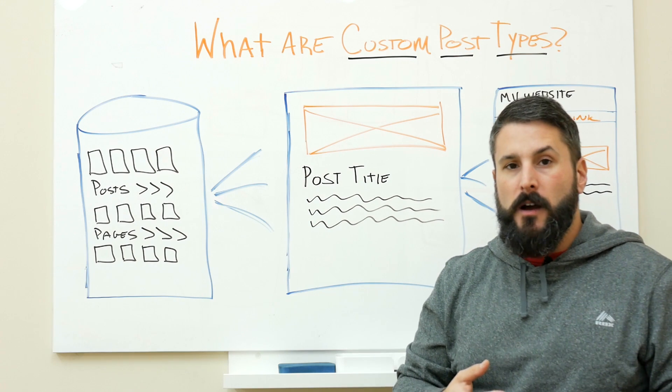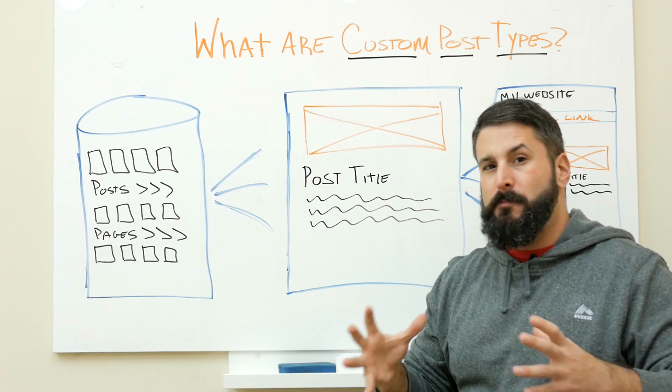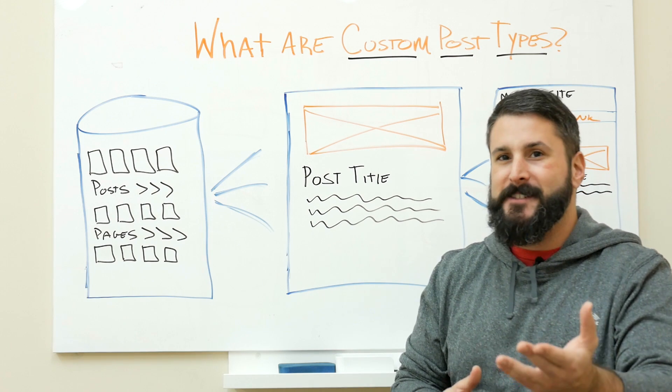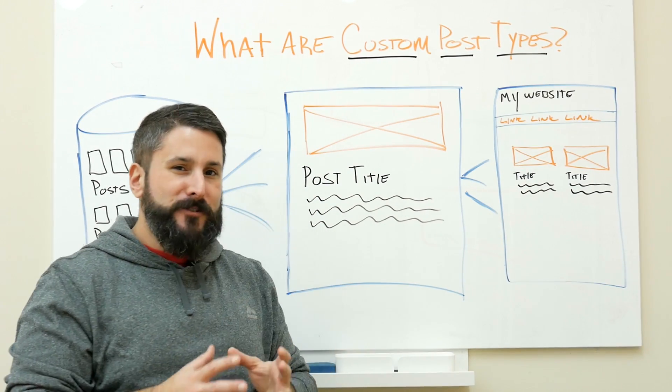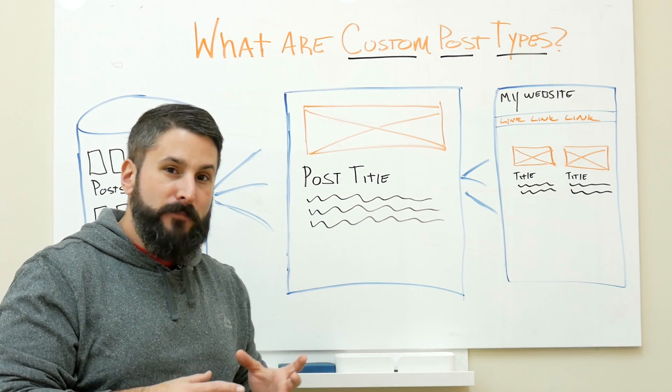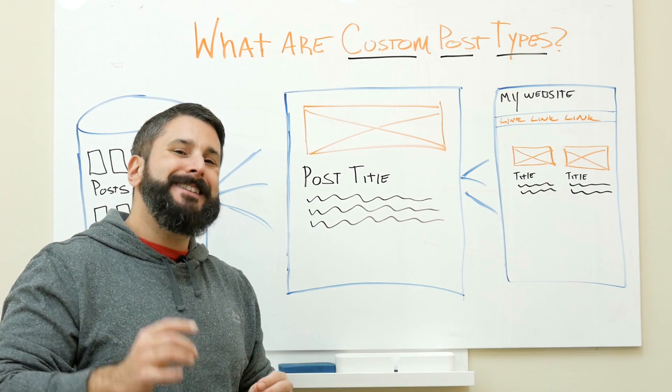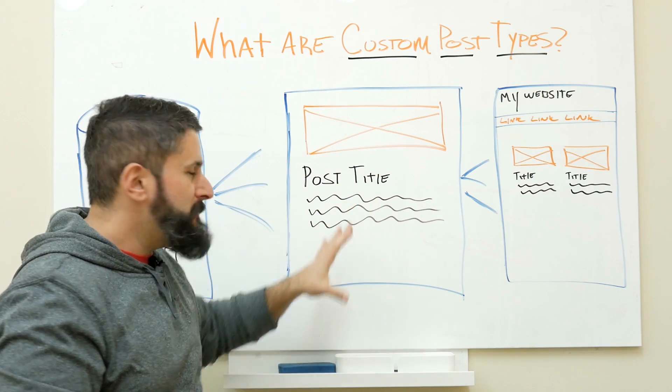If you think of what the most popular custom post type is in the WordPress world, can you guess what that is? Probably not. It's WooCommerce products. WooCommerce products are actually custom post types with custom fields, and that is what really separates a custom post type from a traditional blog post.